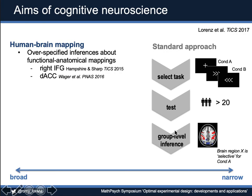First of all, pertaining to human brain mapping. We derived at a very over-specified inference about functional anatomical mappings from drawing those inferences because we can only draw them based on the conditions we tested in that particular study, but we can't make any conclusions about any other task out there we haven't even tested for.